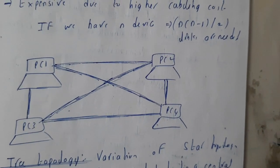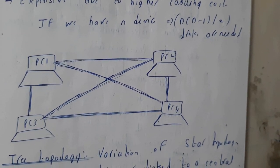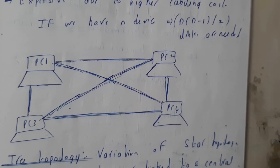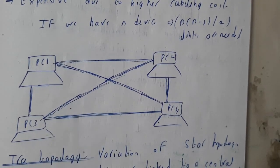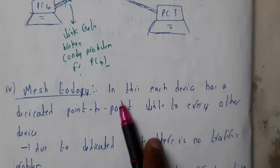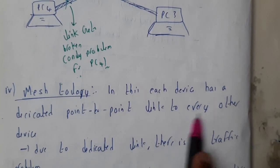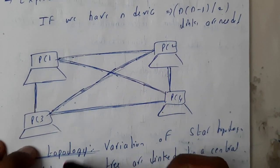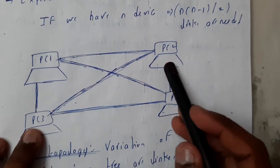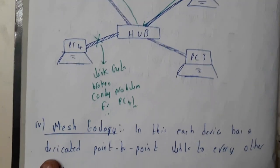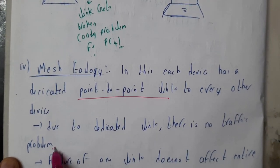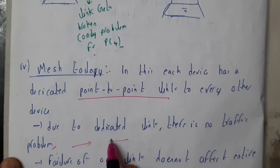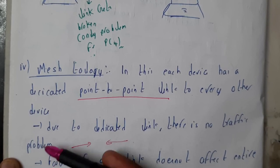Now let us go through mesh topology. From the diagram you can see that connections are given for all possible combinations of devices. In mesh topology, each device has a dedicated point-to-point link to every other device. In a dedicated link, only the two connected devices communicate — for example, only PC2 can send to PC3 or PC3 can send to PC2. This is why we call it a point-to-point link, as discussed in our previous lecture.